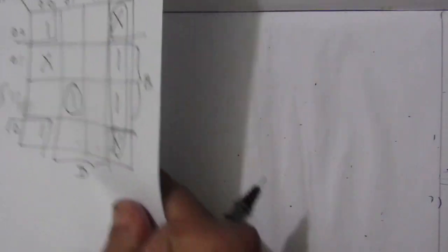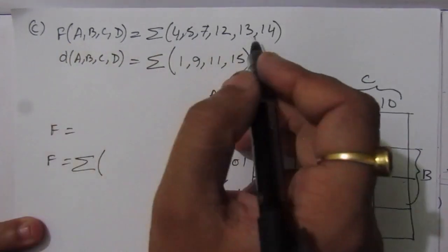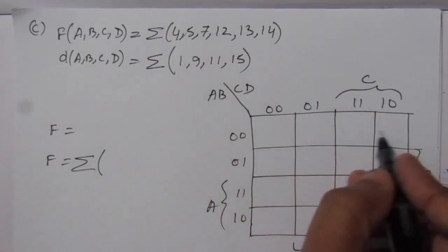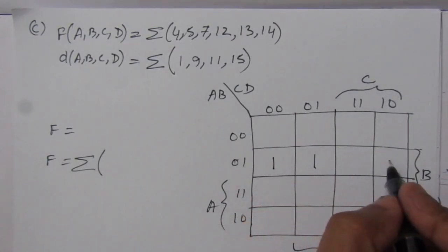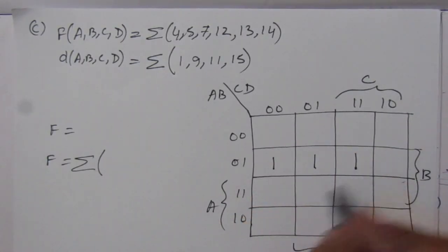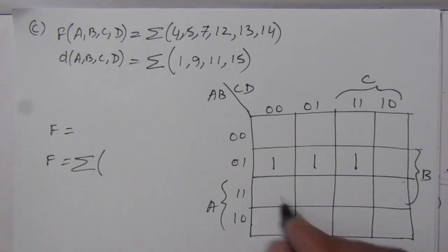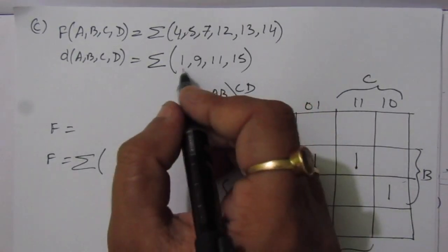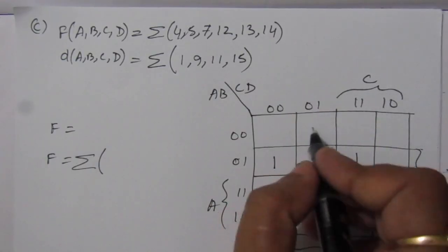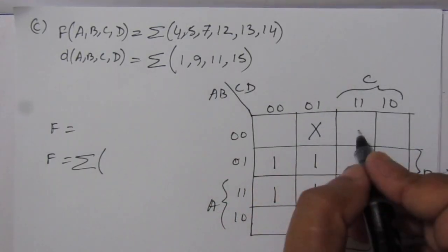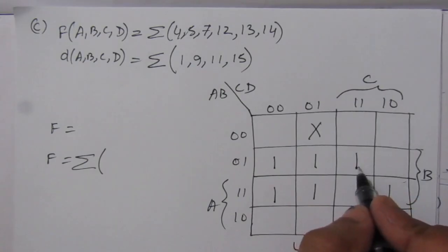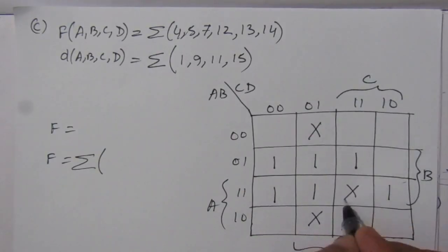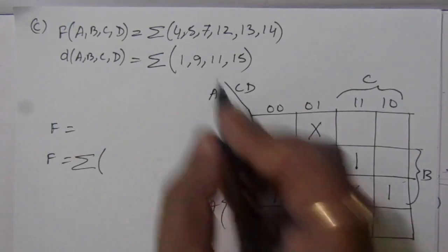Now let us go to the third part of the problem. This is the given function and this is the don't care condition. Minterms 4, 5, 7 are placed. Positions 0, 1, 2, 3, 4, 5, 6, 7, 8, 9, 10, 11, 12, 13, 14 are mapped. The don't care conditions are 1, 9, 11, and 15. Position 15 is the don't care condition here.